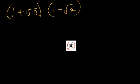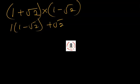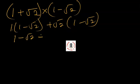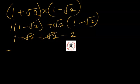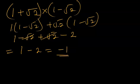Now let's multiply it out. We have (1 + √2) multiplying (1 - √2). It becomes: 1 times 1 is 1, minus √2 times 1 is minus √2, plus √2 times 1 is √2, and √2 times minus √2 is minus √2 squared, which is minus 2. The minus √2 and plus √2 cancel out, and we're left with 1 minus 2, so my answer is minus 1.